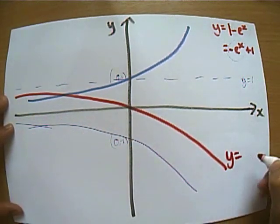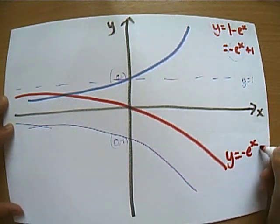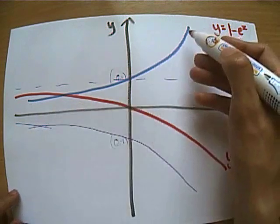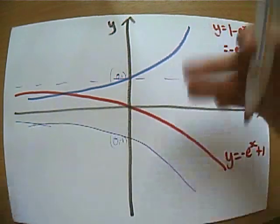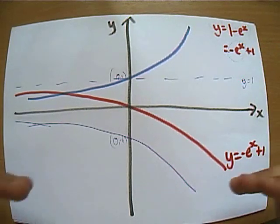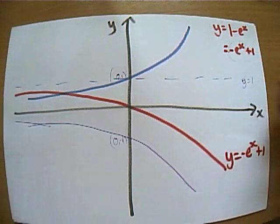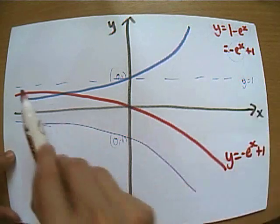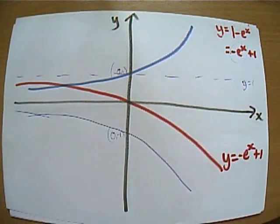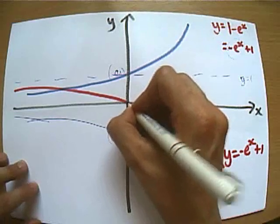is going to be this: y equals negative e to the x plus 1. We've taken our e to the x graph, we've made it negative so we've reflected it in the x axis, we've then added 1 to everything which means we've translated all the coordinates 1 up. And just to show the examiner we really know the business, we're going to draw a dash line for the asymptote of y equals 1, and we've already shown that it's going through the origin.